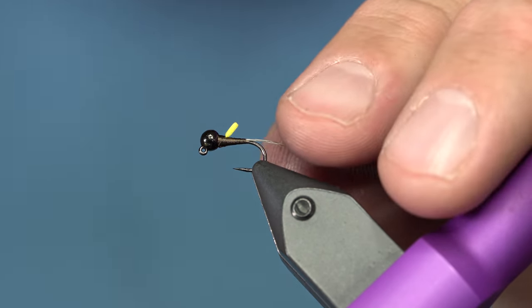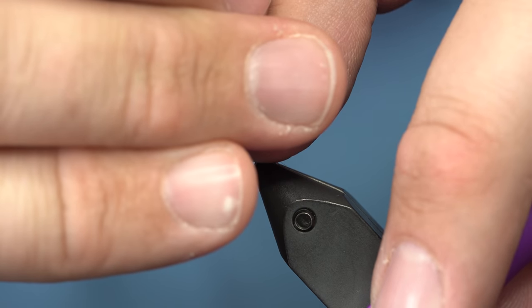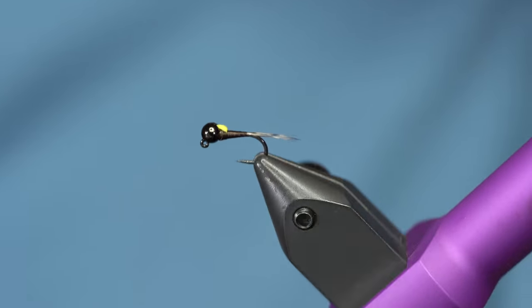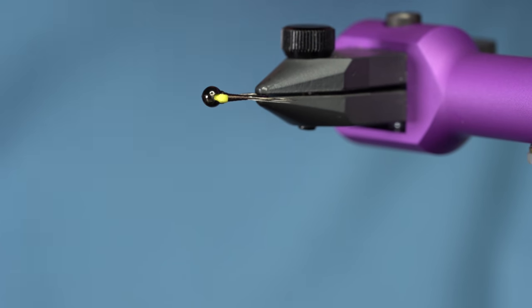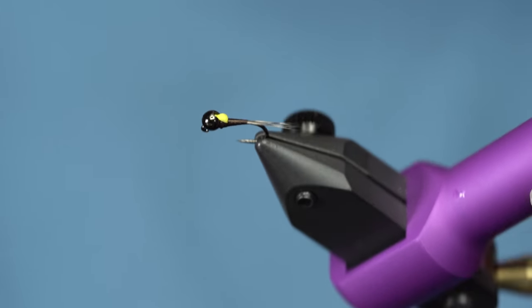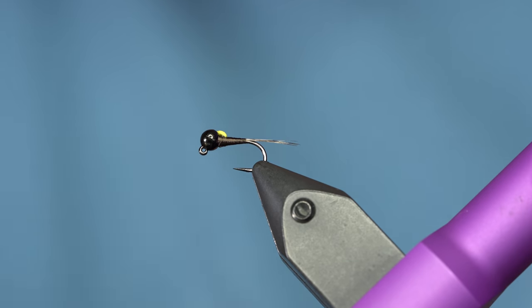I'm just going to cut it about right there. So now I'll just take a bodkin and I'm going to take that foam and I'll just jam it down into the bead just like that. That creates a wing case that kind of turns the slot of the bead into a crucial part of the fly.